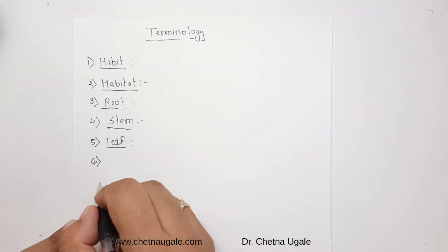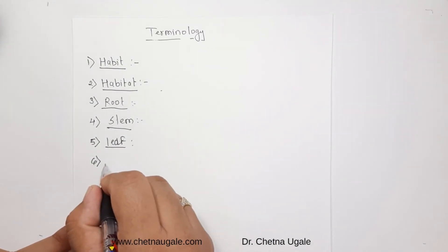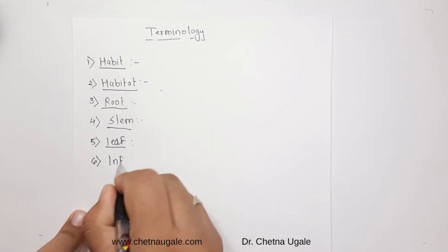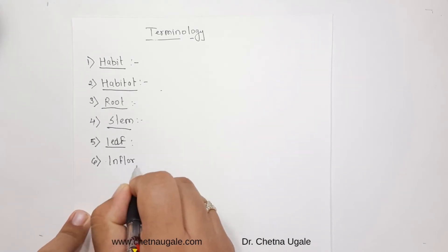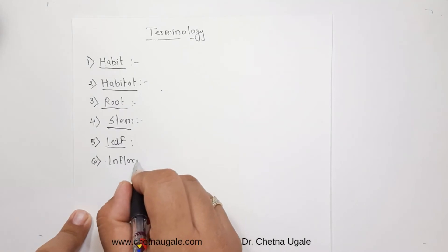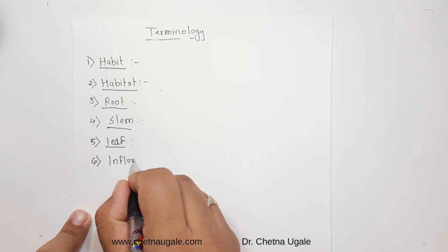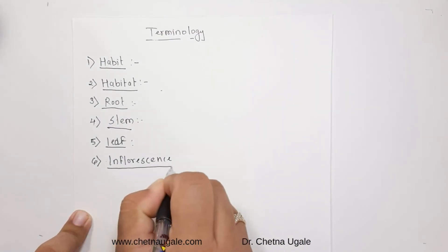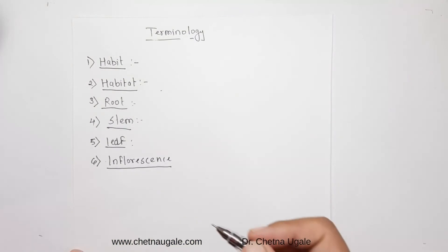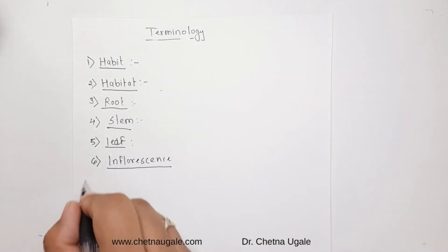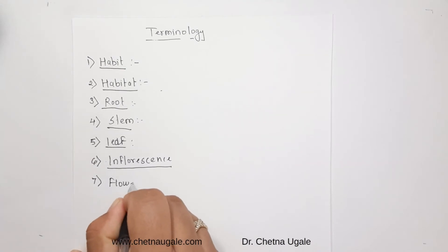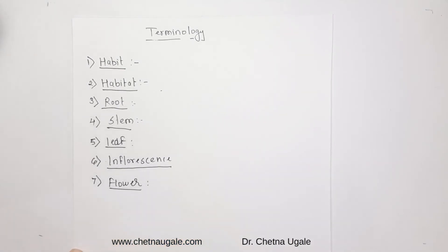The next term used in the description of a plant is inflorescence. Inflorescence is the arrangement of flowers on the axis in a particular or specific order, whether it is ascending or descending. Generally, inflorescence is of either racemose type, cymose type, or a special type.